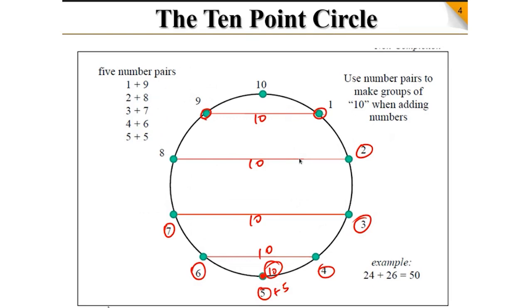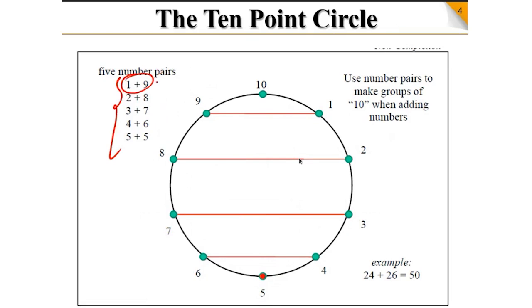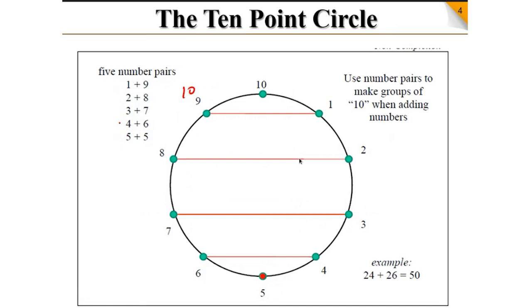Look at this: 1 plus 9 is 10, 2 plus 8 is 10, 3 plus 7 is 10, 4 plus 6 is 10, 5 plus 5 is 10. We need to keep all these numbers in mind. So if I ask you what is the pair of 7, you say 3. What is the pair of 9? 1. What is the pair of 6? 4.